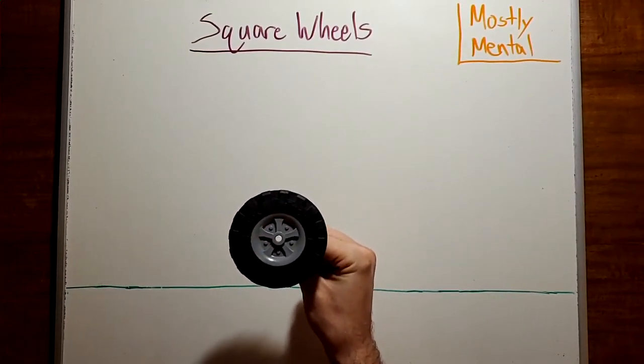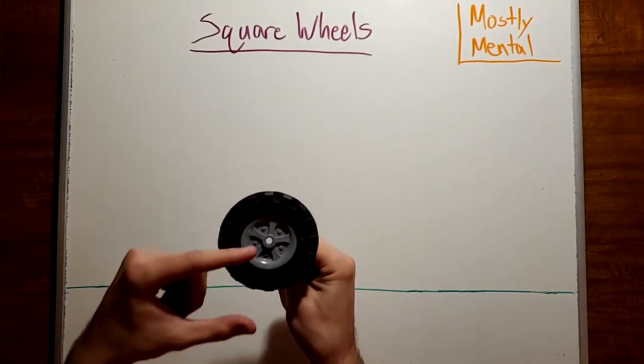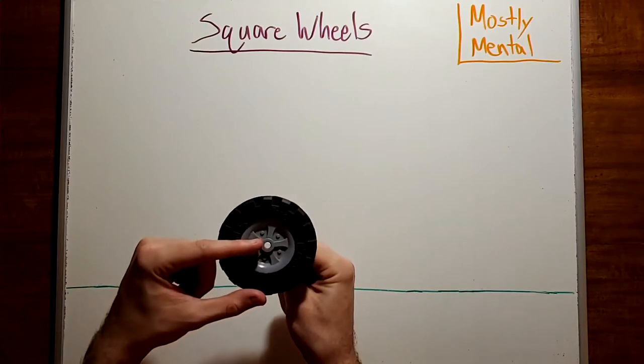With a circular wheel, every point's the same distance from the center, so it doesn't really matter which end is up, the axle's always one radius above the ground.